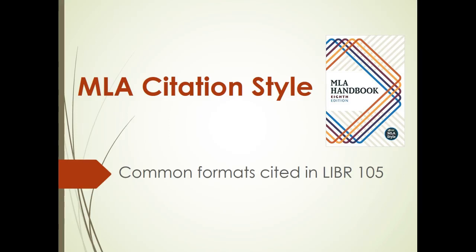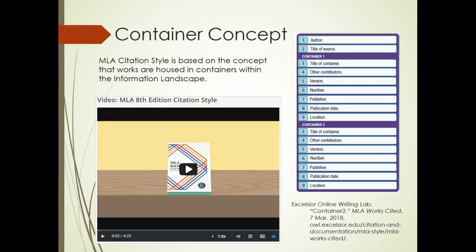This video introduces students to using the MLA citation style for the formats commonly cited in the Annotated Bibliography Signature Assignment in the Library 105 Resources for Research course at the College of Charleston. The purpose of citation is to avoid plagiarism and to assist readers in locating the exact sources you used in your research. MLA citation style is based on the concept that works are housed in containers within the information landscape. Readers will interpret your citation to find the exact source you used by following the containers to the original source.